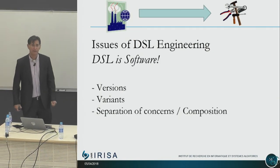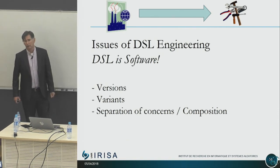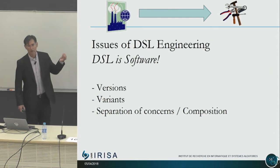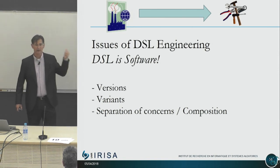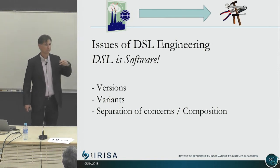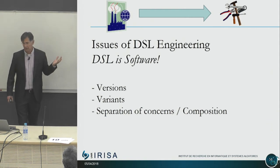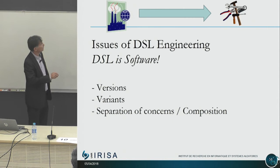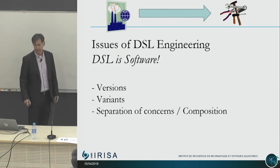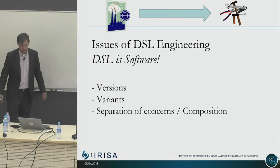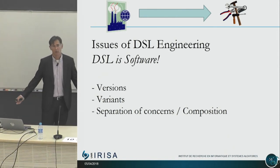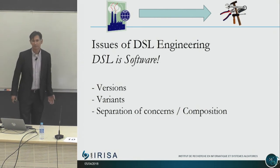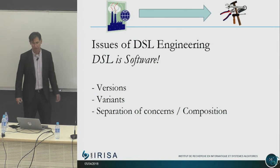The first thing to realize is that a DSL is software — when you produce a DSL, it's a language, but if you want it to be useful, it has to be supported by software: editors, compilers, checkers, interpreters, tools. What we want is a fabric for producing these tools — not by hand, but using engineering methods. And because they are software, they suffer from the same things: versioning, variants, and of course separation of concerns and composition.